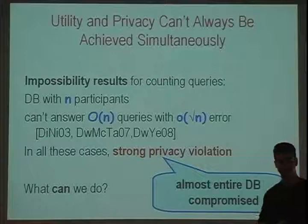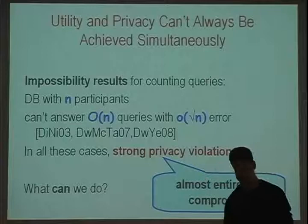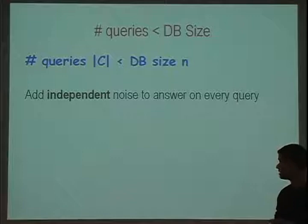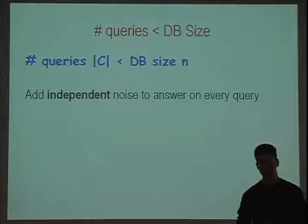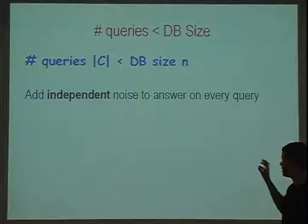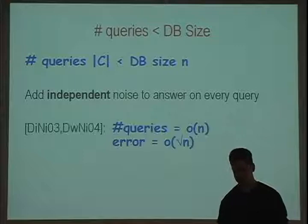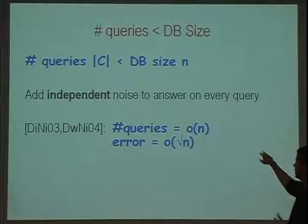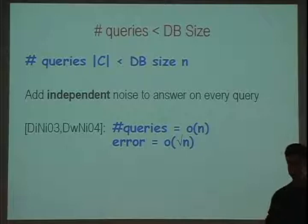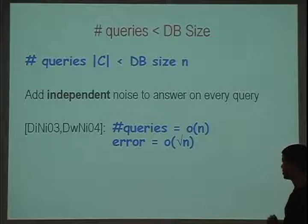Those are impossibility results we have to live with. We can either answer fewer queries or add more noise. Most previous work has focused on answering fewer queries. If the number of queries we want to answer is smaller than the database size, we can do quite a lot. The main technique is to add independent noise to the answers for every query. Dinur-Nissim and Dwork-Nissim show you can answer almost a linear number of queries with less than square root of n error, while getting epsilon differential privacy for constant epsilon — nearly matching the negative results.